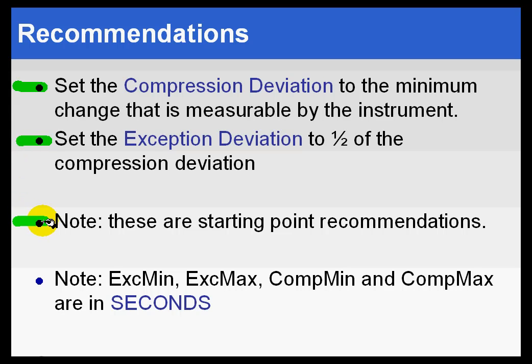However, they are the starting points. One of the things I would suggest you do is set up, say, 5% of your tags and make it a good representative — 10%. Make some of them network traffic monitors, some of them temperatures, some of them pressures, some of them levels, flows, whatever it is you're measuring. Just a variety. And then watch how those collect data. Of course, not everybody has the time to set up 5% of your tags, watch the data, and then make adjustments. But it is the best way to tune the system.